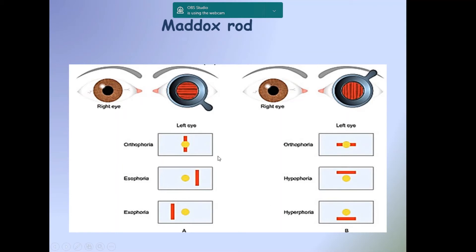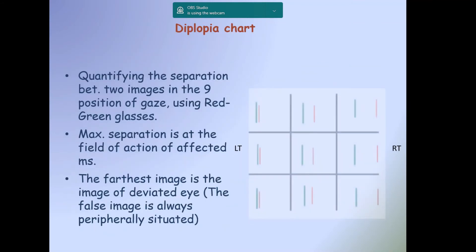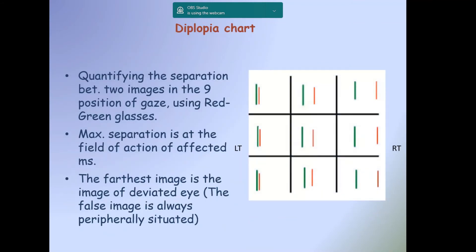Maddox rod is simple but it cannot differentiate between phoria or tropia. So we should combine subjective and objective methods together. We should do alternate prism cover test first to know that it is a tropia, not phoria, and then do Maddox rod test after that to detect either it is horizontal or vertical diplopia.